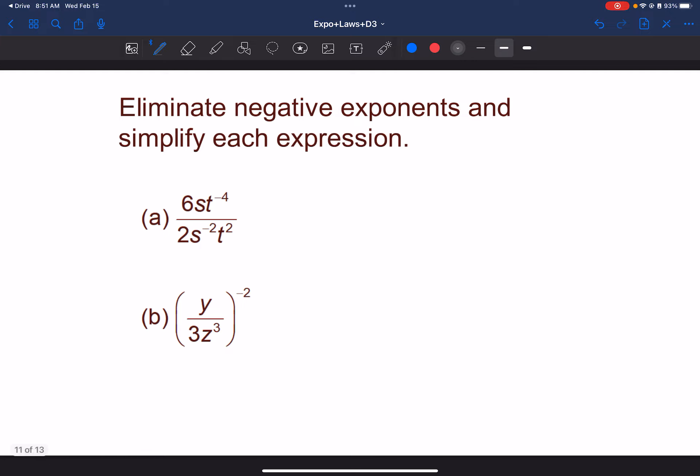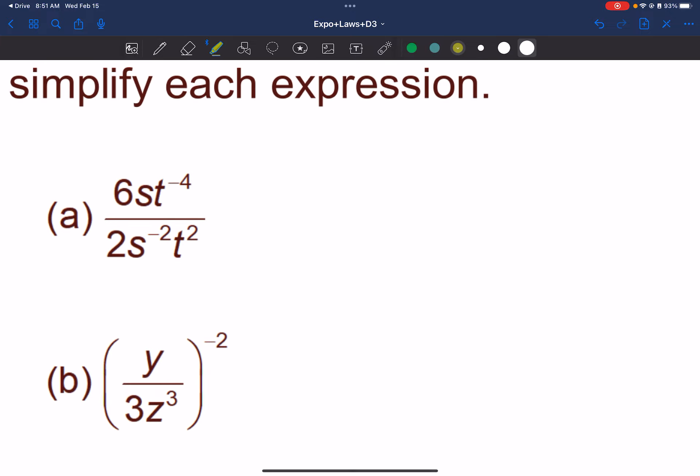All right. With negative exponents, again, remember, move them to the other side. So our negatives that we see here are this t and this s. So everything else can kind of stay. We can still have 6s on top and we can still have 2t squared on bottom. But we'll have now t to the 4th on bottom and s squared on top. Now, simplifying that, 6 over 2 is 3. We'd have 3s's on top and 6t's on bottom.